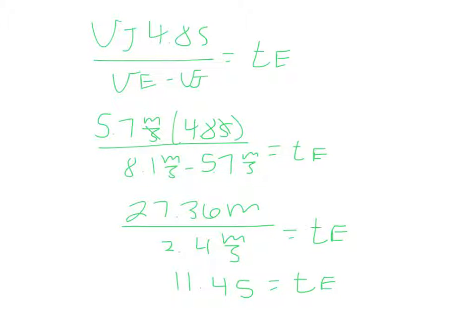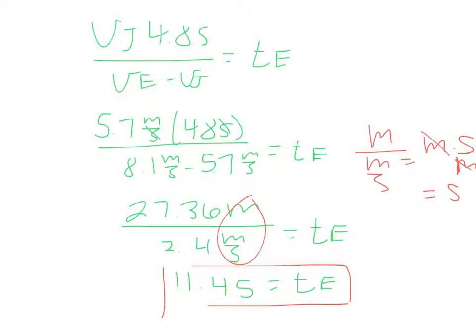How do I know those units are seconds? Just a quick unit check over here. You get meters over meters per second. This equals meters times seconds over meters. Meters cancel, left with units of seconds. We were solving for a time. It makes sense that the units should be seconds. So Edward's time is 11.4 seconds.